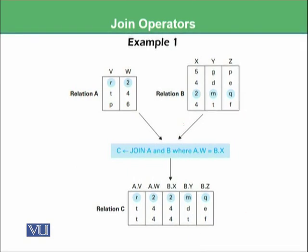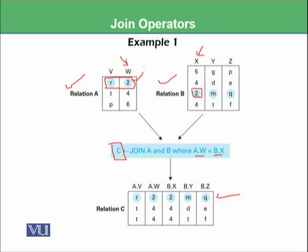In this example, we are interested in forming a new relation C, and the condition is: join A with B where A.W is equal to B.X. You can see this is relation A and this is relation B, this is the W column and this is the X column. Wherever these columns are equivalent, they should be joined. The first row is picked and we check whether the value 2 appears in the X column — yes, it is available, so it will be joined: R2 to MQ. So this first line is formed.